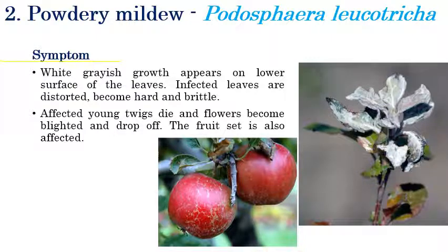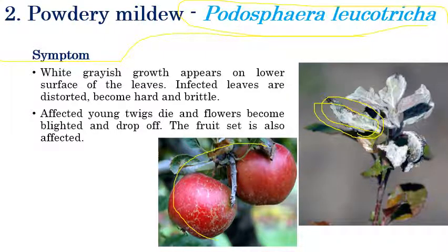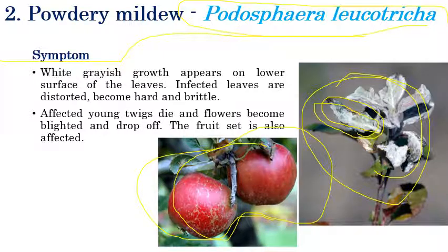The second disease is powdery mildew, caused by Podosphaera leucotricha — one of the important diseases in apple. White color powdery growth can be seen on leaves and fruits. Infected leaves are brittle and very hard to the touch. Infected twigs are also covered with white powdery growth. Fruits show slight cracking and discoloration.